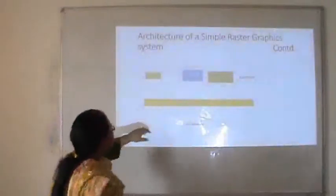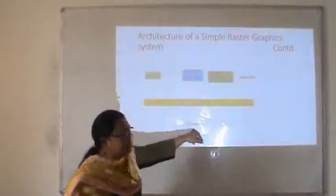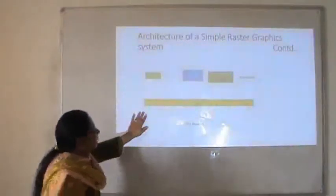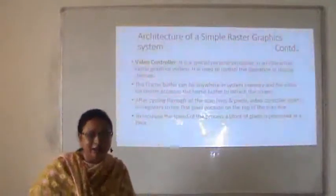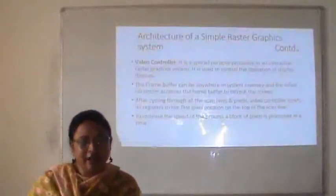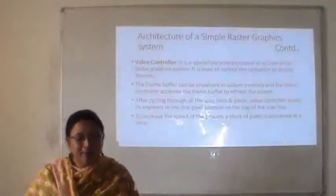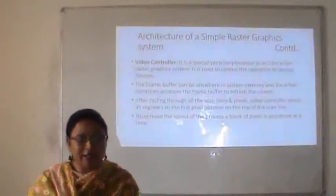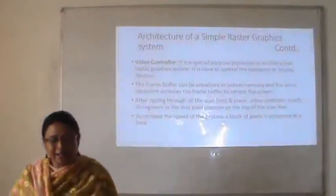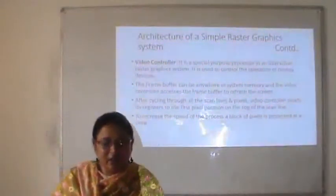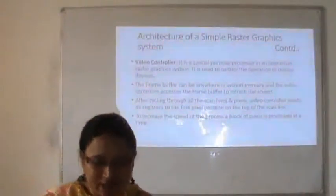The architecture of a simple raster graphics system includes a system bus connecting the CPU, system memory, video controller, monitor, and I/O devices. The video controller is a special-purpose processor in an interactive raster graphics system, used to control the operation of display devices. The frame buffer can be anywhere in system memory and the video controller accesses the frame buffer to refresh the screen. After cycling through all scan lines and pixels, the video controller resets its registers. To increase processing speed, a block of pixels is processed at a time.